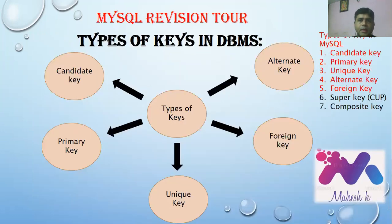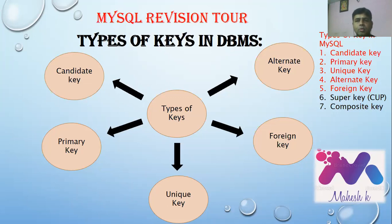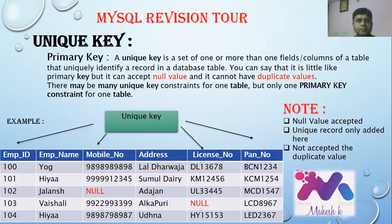Types of keys available in MySQL: according to the NCERT syllabus, there are five types of keys — candidate key, primary key, unique key, alternate key, and foreign key. There are also super key and composite key, but our syllabus covers only the five mentioned.